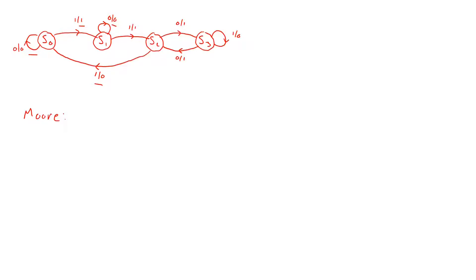For S2, both entering edges output a one, so we don't have to do anything with S2. For state S3, we also have two entering edges — one outputs a one and one outputs a zero — so we need to split S3 into two different states as well.